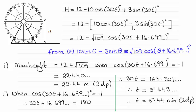So using this answer from part a, then I can pick up on this expression in here as being the root of 109 cosine of 30t in place of θ, plus what we worked out before, 16.699 and so on degrees.